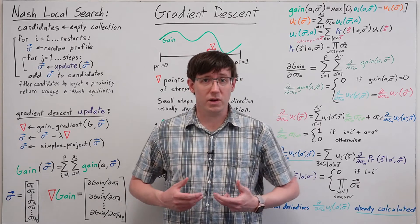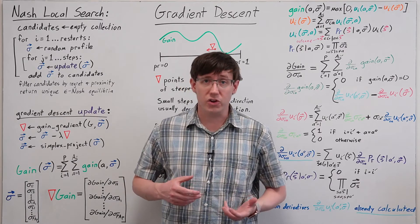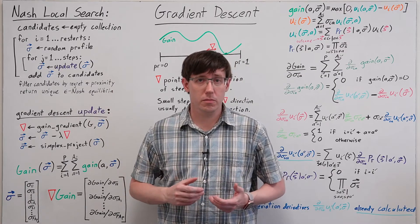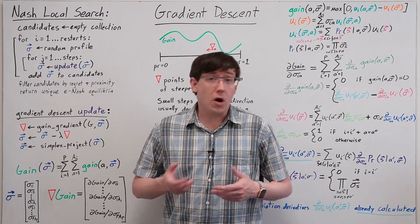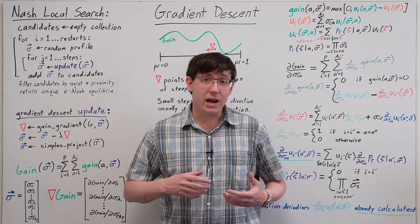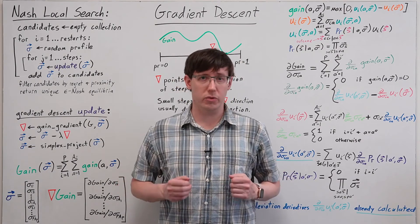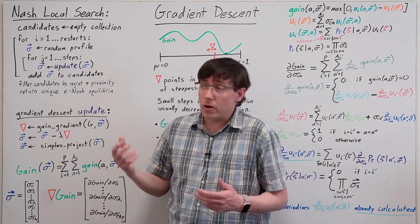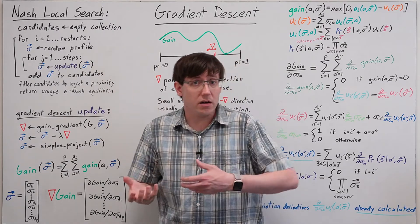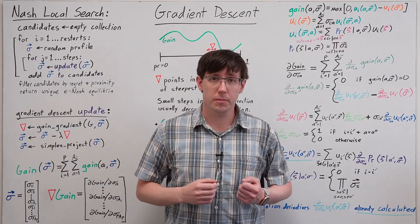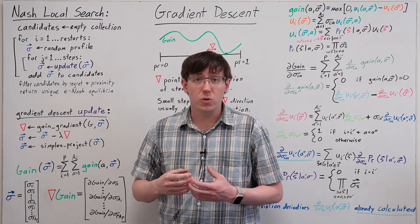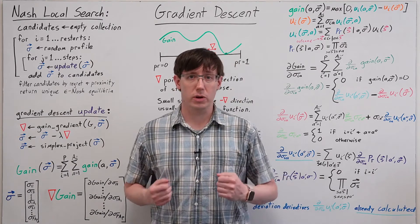All of the incomplete methods we've discussed for identifying Nash equilibria share the underlying structure of a local search algorithm, where we start from some arbitrary profile and then iteratively update that profile in a way that we hope will push it towards a Nash equilibria. We might restart many times from different initial profiles to build a set of candidate equilibria, and then we'll compute regrets to filter those candidates down to a collection of actual epsilon Nash equilibria.